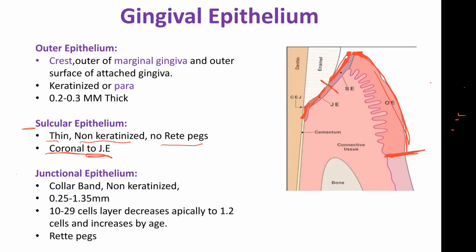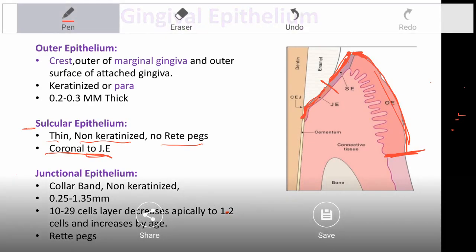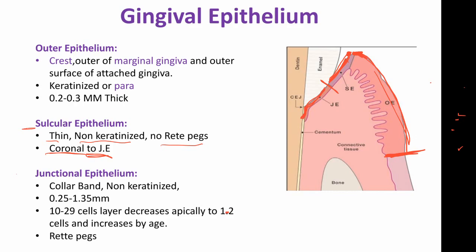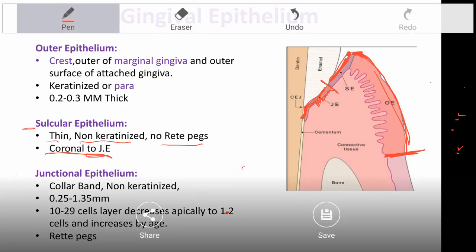The junctional epithelium decreases apically to one to two cell layers. The number of cell layers increases with age. It is the only epithelium that has rete pegs — extensions of the epithelial cells into the connective tissue.